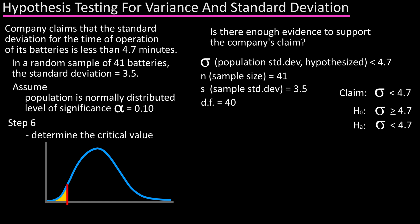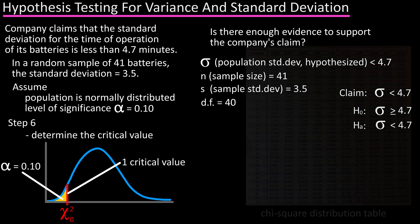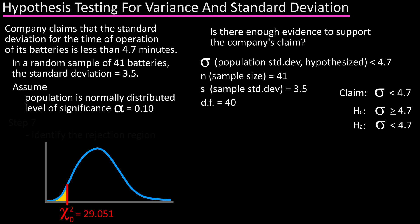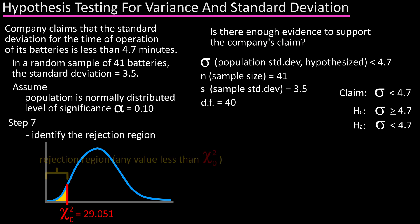Step six is to determine the critical value. Since this is a one-tailed left-tailed test, there will only be one critical value. With alpha equals 0.10, we need to find chi-square naught in the chi-square distribution table where the area to the right equals 0.90. We go to the 0.90 column at the top and the 40 degrees of freedom row on the left; the value where these intersect is 29.051. So the critical value chi-square naught equals 29.051. Step seven: the rejection region is any standardized test statistic less than chi-square naught, which is any value less than 29.051.